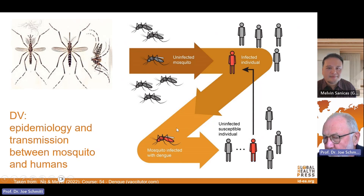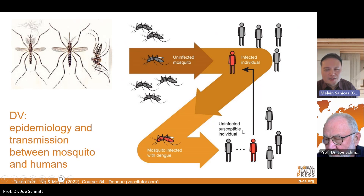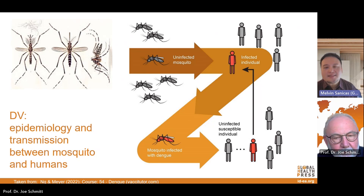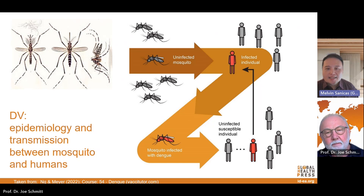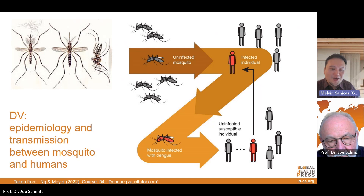If you vaccinate humans with a highly effective vaccine, the human reservoir would largely disappear. But dengue can actually be transmitted to non-human primates as well, and they are also a reservoir for the dengue virus. However, in most countries — especially those shown in the darker regions on the map — humans are really the primary reservoir for dengue.